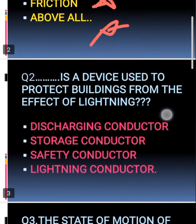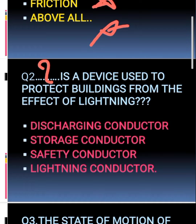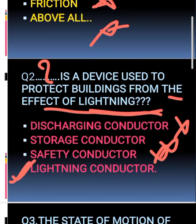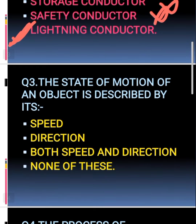The second question: which device protects the building from lightning? When thunder comes it becomes a lightning effect. The answer is the lightning conductor — it will save the building from lightning.